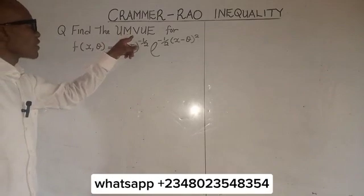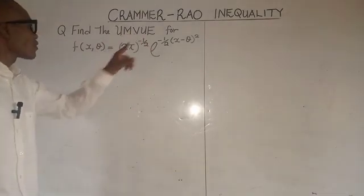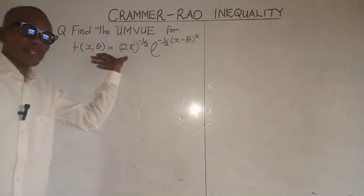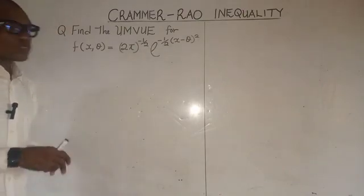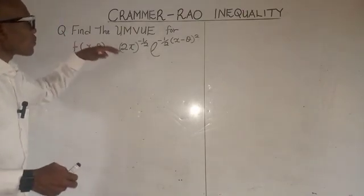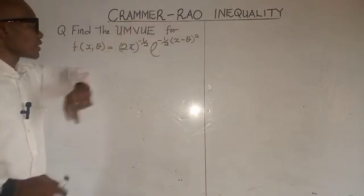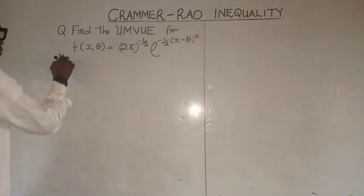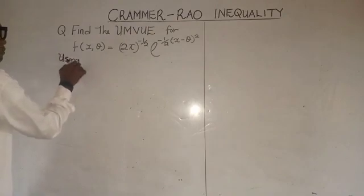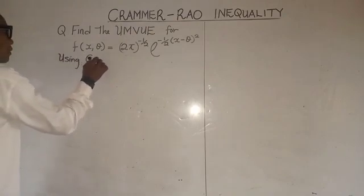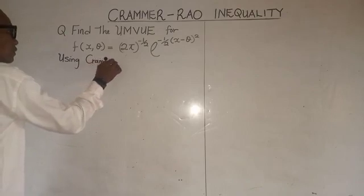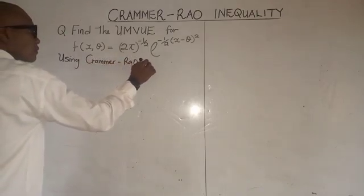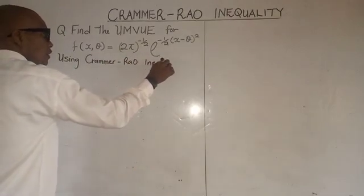Find the minimum variance unbiased estimator for this distribution. It's looking like a normal distribution. So what will we do? We have to use the Cramér-Rao inequality to move forward, because the equation is using the Cramér-Rao inequality.